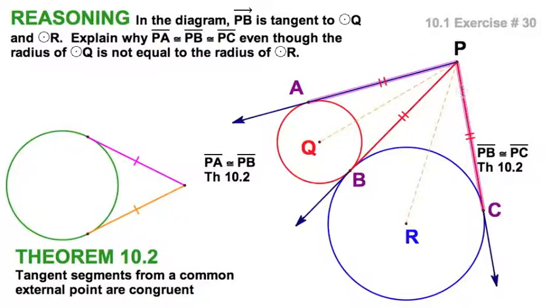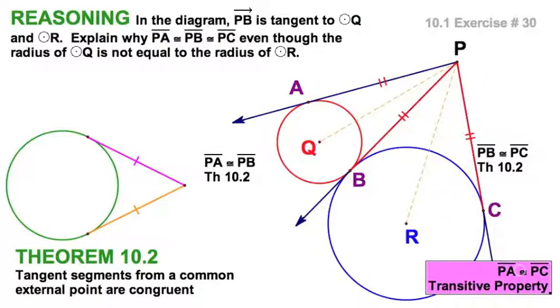...then these two are congruent by the transitive property. So again, all three of these segments, one, two, three. These three segments are congruent, regardless of the size of the circles.